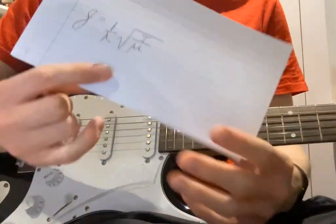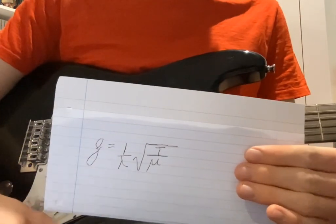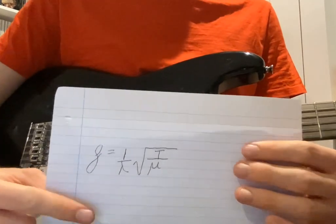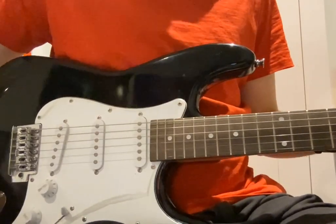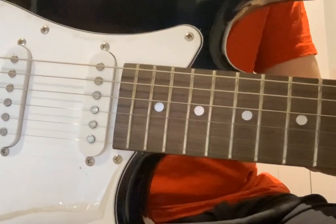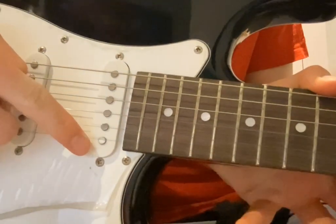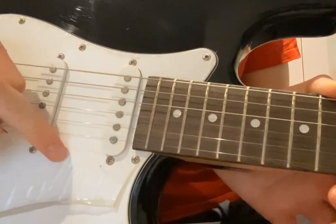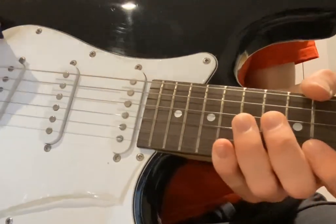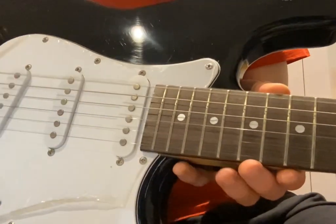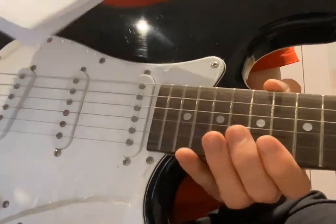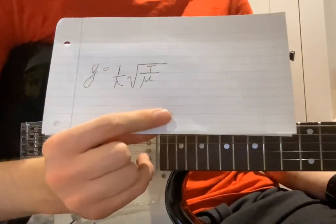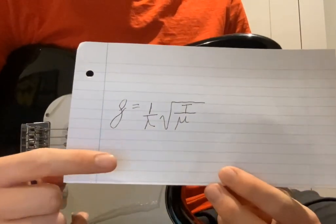The next thing we can look at is the things inside the square root, and we'll start by looking at mu — that is the mass per unit length. One thing you might notice about a guitar is that the strings are different sizes. On camera it's quite hard to see, but this one down here is very thick, this one's a little less thick, and so on down to this very thin one. And the thicker strings play a lower pitch, because this mu term is greater, and because it's on the denominator, that means we're decreasing the frequency.